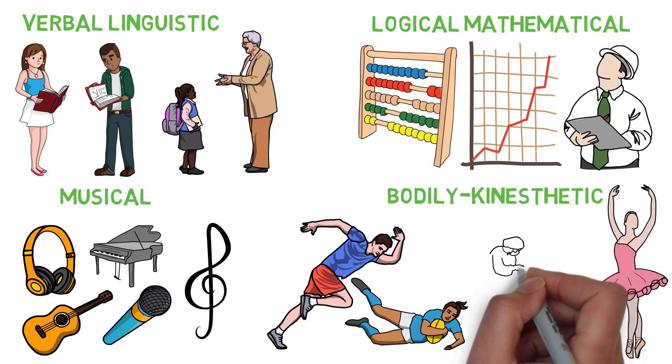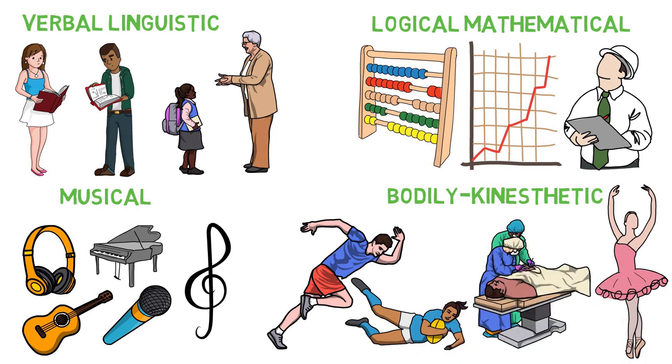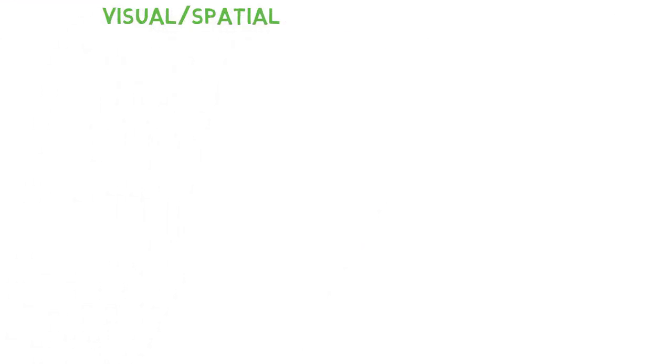Athletes, dancers, actors and surgeons are often high in bodily kinesthetic intelligence. The fifth type is visual-spatial intelligence.